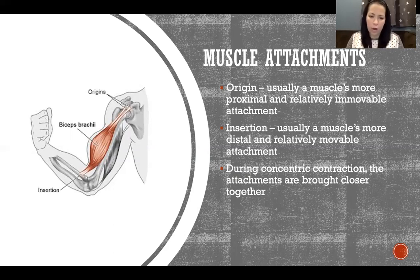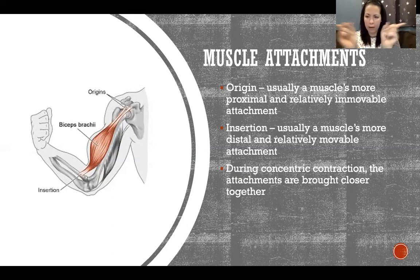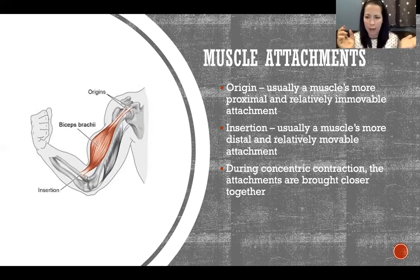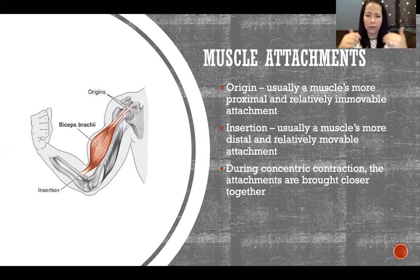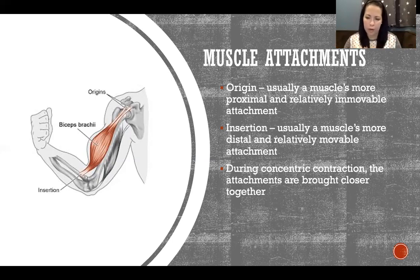Usually it's a matter of which end has more mass. When the muscle is contracting and force is being applied to both attachments, whichever attachment — whichever limb or bone — has less mass is going to be the one that moves. Whichever has less mass has less inertia and will move in response to the force applied by the muscle contracting.